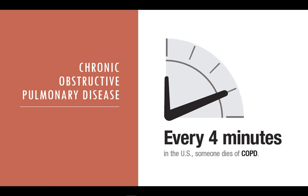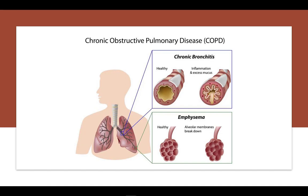Chronic obstructive pulmonary disease, known as COPD, is an incurable condition that results in progressive obstruction and inflammation of the airways. The two main types are chronic bronchitis and emphysema. It is the third leading cause of death in the US. In emphysema, the walls between many of the air sacs are damaged; as a result, the air sacs lose their shape and become floppy. This damage can also destroy the walls of the air sacs, leading to fewer and larger air sacs instead of many tiny ones, reducing the amount of gas exchange in the lungs.